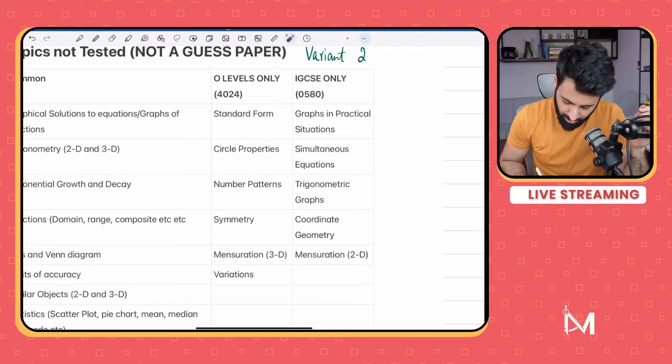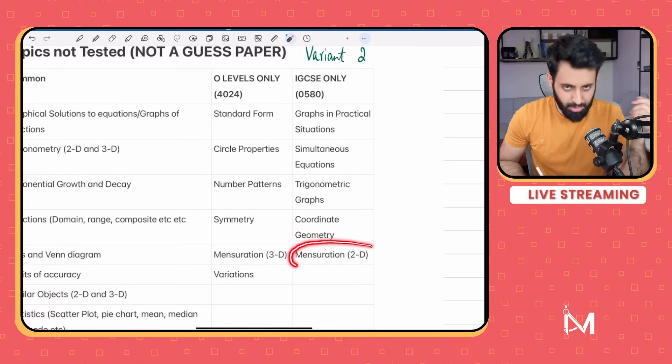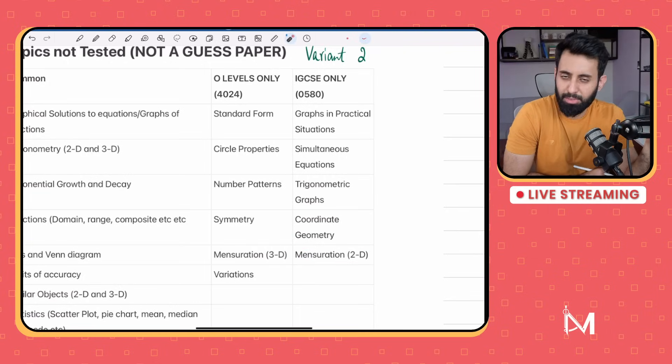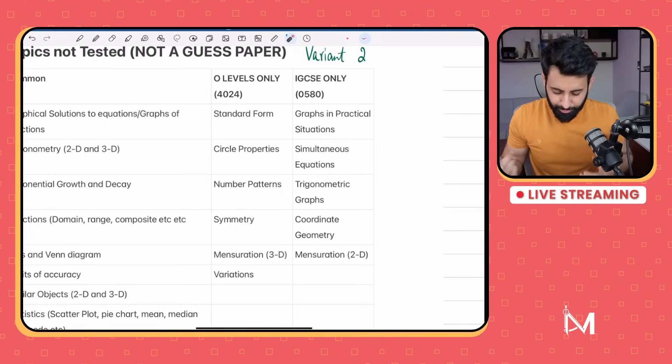In IGCSE there was a question in mensuration where you had to find out maybe the curved surface area - I think it was a hemisphere and a cylinder. So since that was 3D, that means you can expect a bit of 2D mensuration in IGCSE.